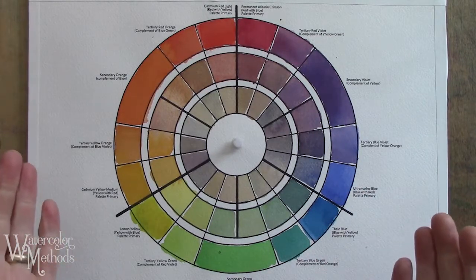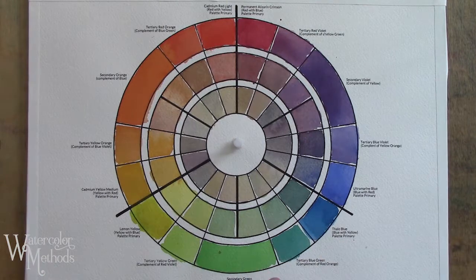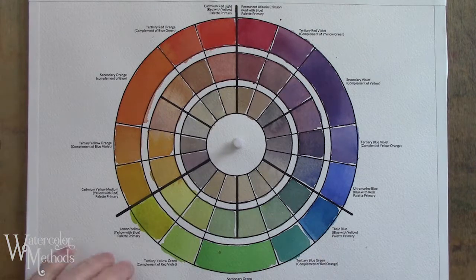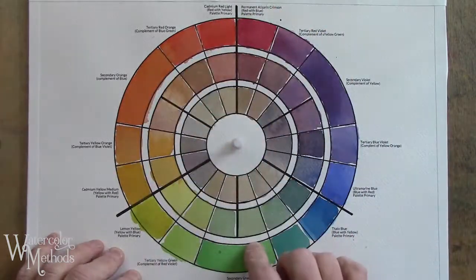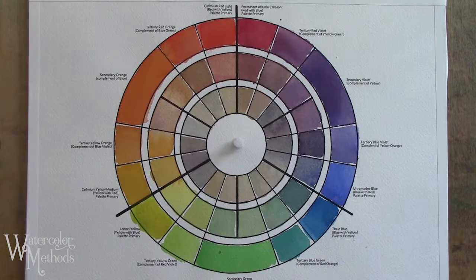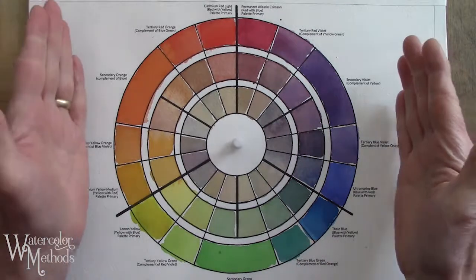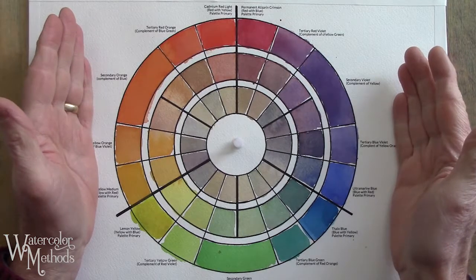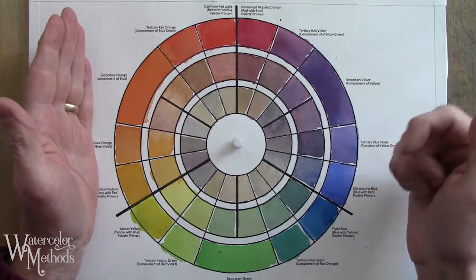The first one we're going to talk about is the analogous color scheme, but to understand both of them we'll want to be working with a color wheel. It'll help us understand this a bit better. In this case, I've got my advanced color wheel. This is a project that we worked on on Watercolor Methods.